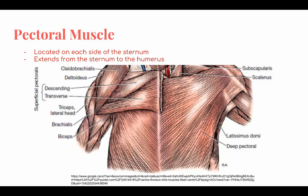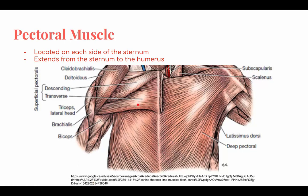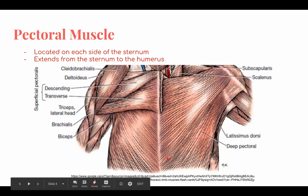Pectoral muscle, located on each side of the sternum, extends from the sternum to the humerus. There are two pectoral muscles: the superficial pectoral muscle, which is located from the sternum at the cranial end towards the humerus at the cranial tubercle — its function is to adduct the thoracic limb. The deep pectoral muscle is covered partially by the superficial pectoral, but is larger and wider. It extends farther caudally, where it lies immediately subcutaneously. Its function is to adduct the limb and pull the limb caudally.